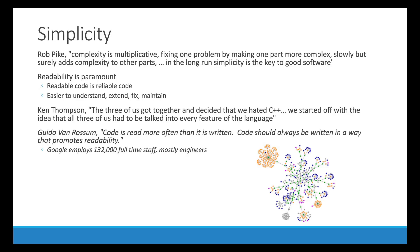Possibly the most important goal of Go is simplicity. Rob Pike said: 'Complexity is multiplicative. Fixing one problem by making one part more complex slowly but surely adds complexity to other parts. In the long run simplicity is the key to good software.' The key word is multiplicative — if we're not careful, complexity can grow and get out of hand very quickly. Readability is paramount: readable code is reliable code that is easier to understand, extend, fix, and maintain. Ken Thompson said: 'The three of us got together and decided that we hated C++. We started off with the idea that all three of us had to be talked into every feature of the language.' So they were not competing to include every feature every other language has, because that would add complexity.